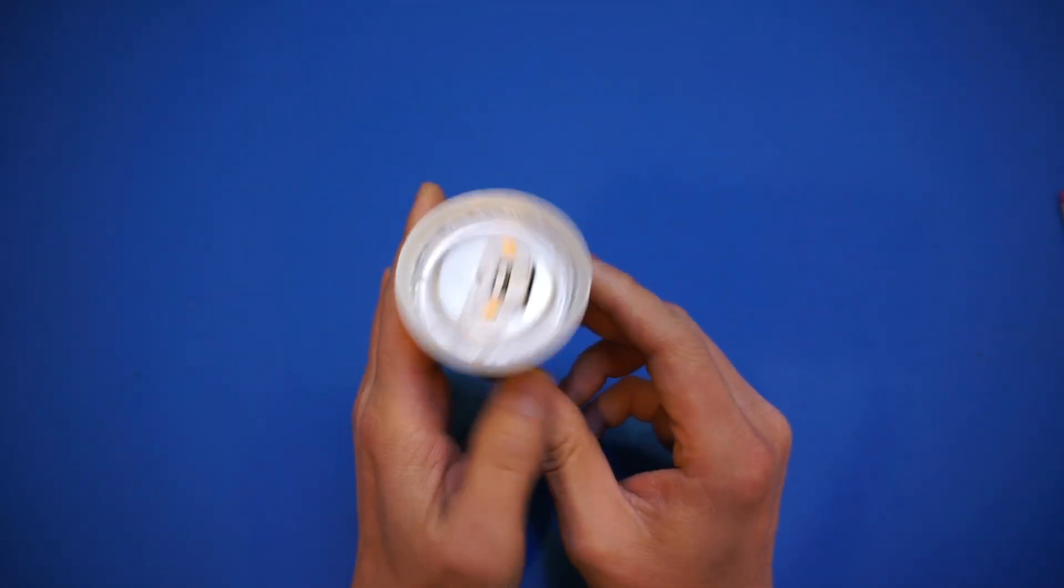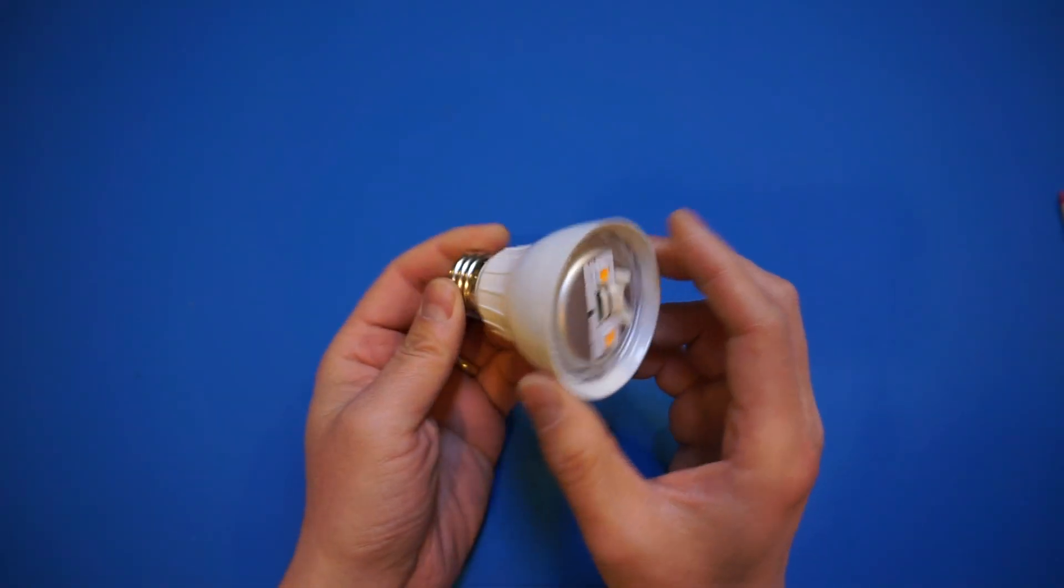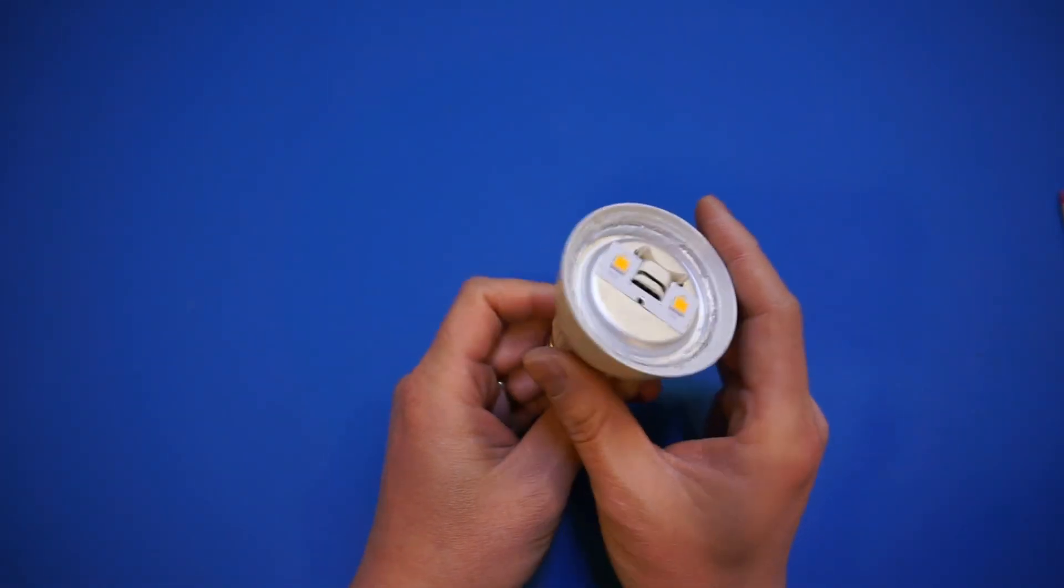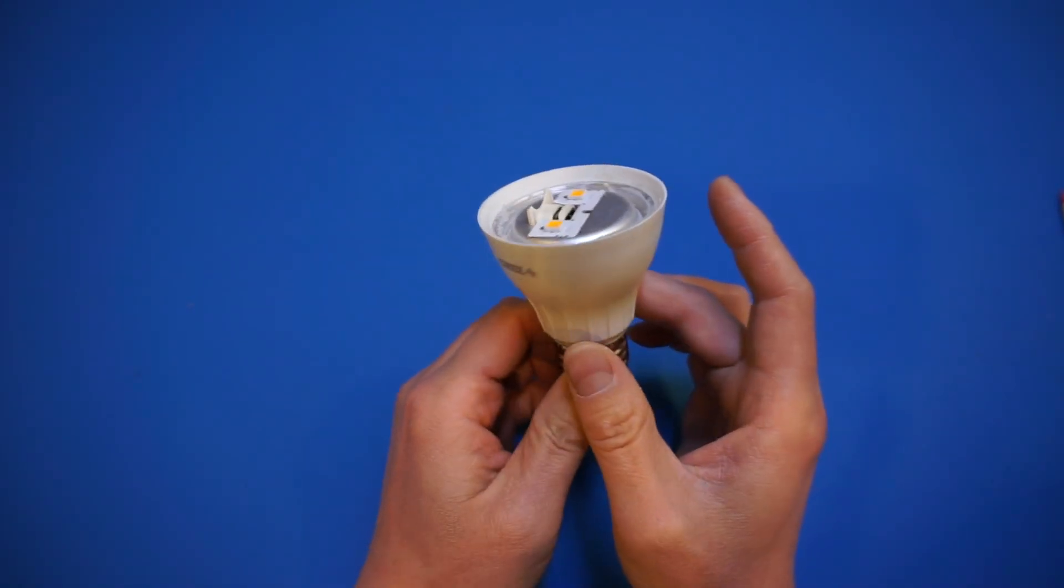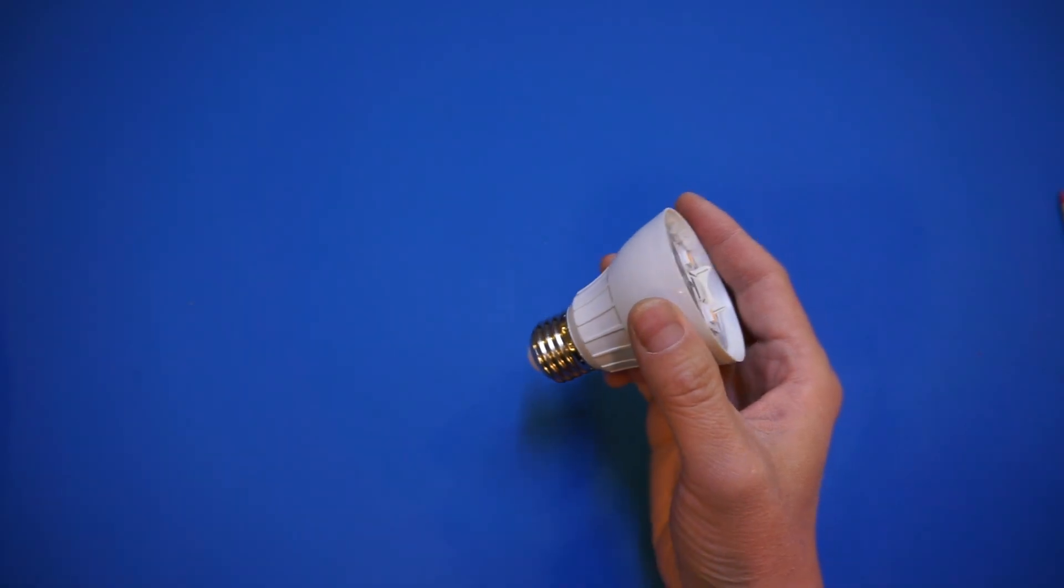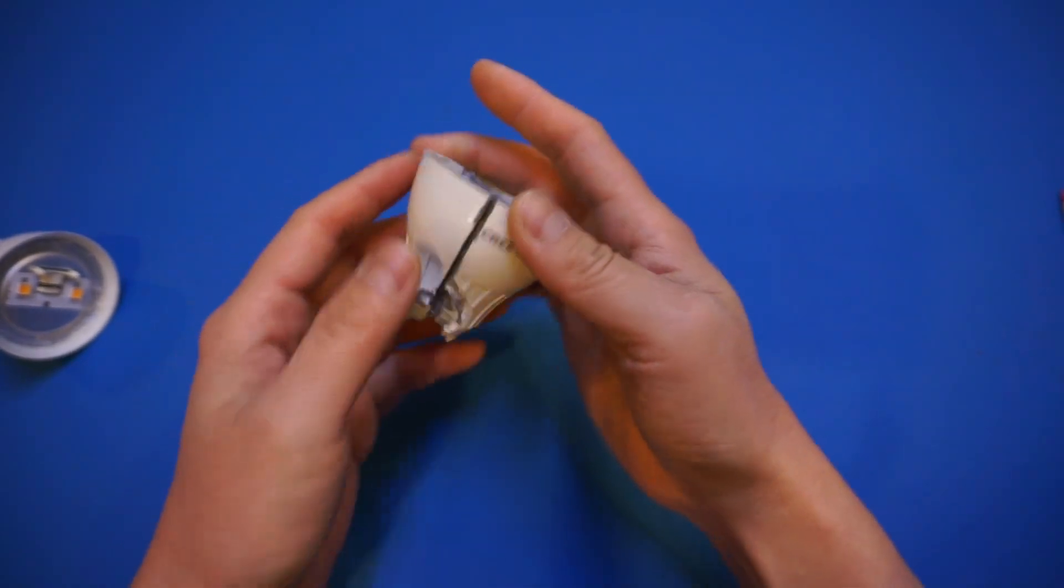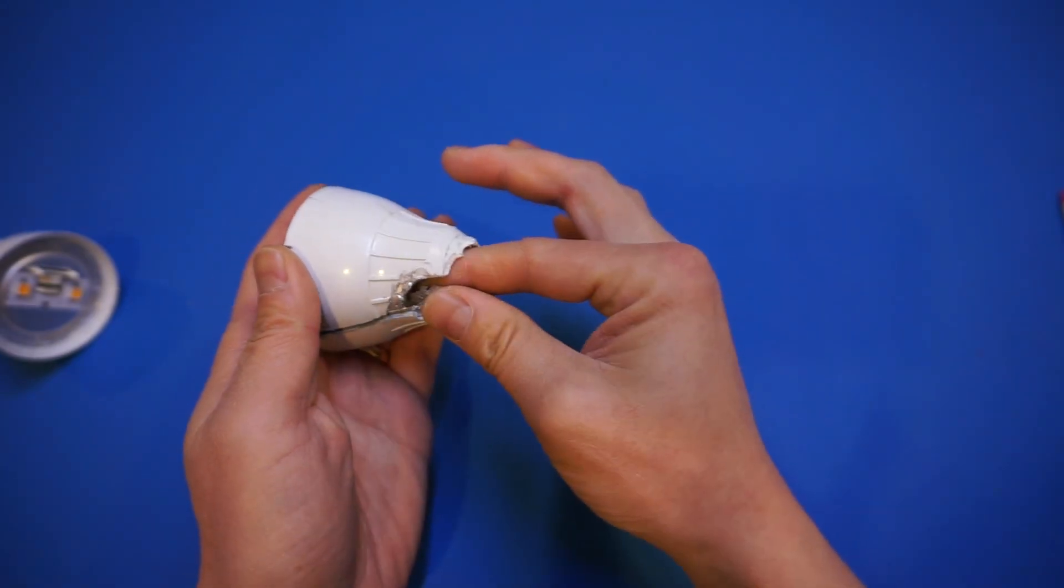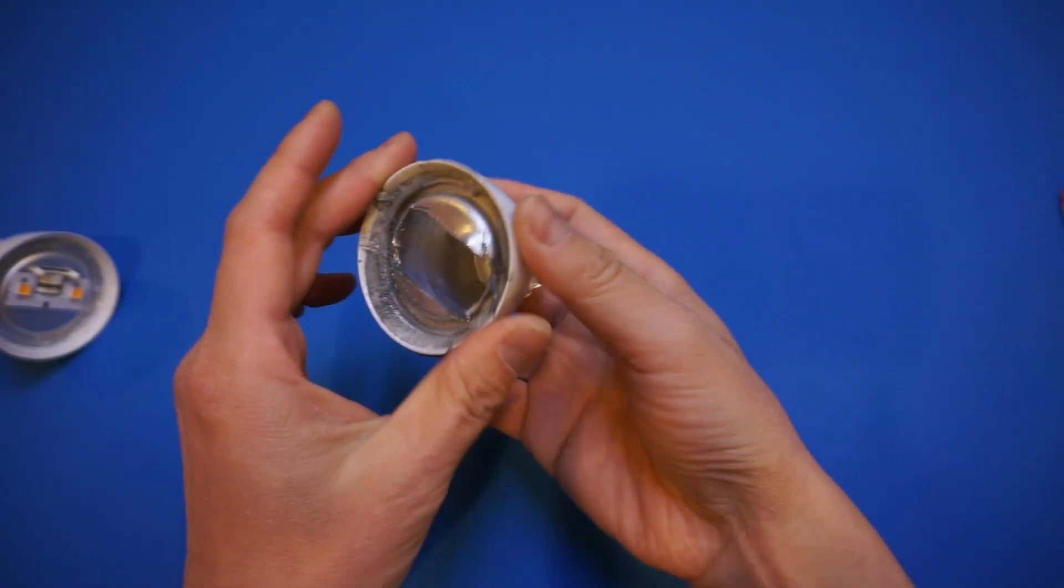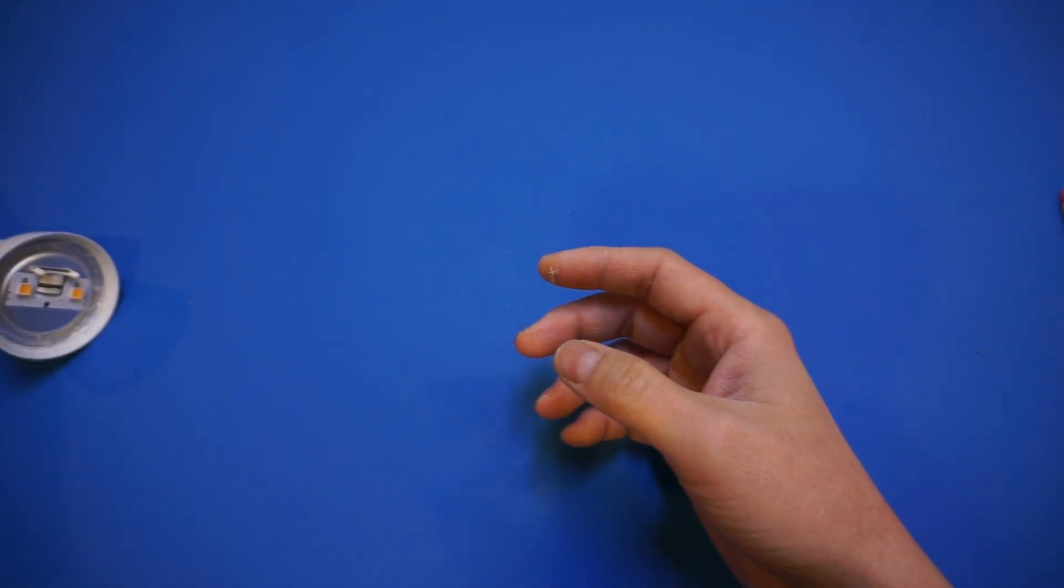So I went ahead and further disassembled this LED bulb. And actually it's not as easy as the Philips I did earlier in the previous video, because these ones are actually potted inside. So it took me quite a bit of work. I had to saw this part open and remove all the potting material. So it's actually quite a mess. But anyway, so at the end I actually removed the circuit board and LED.